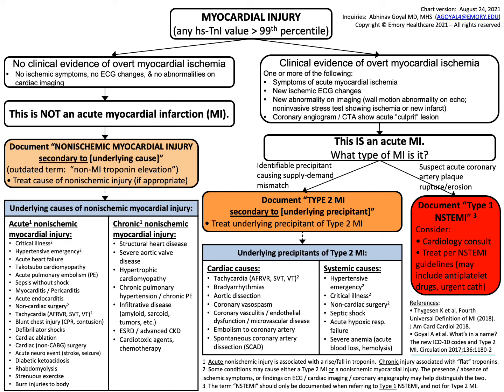If there is an underlying precipitant for type 2 MI, we document a type 2 MI because the underlying mechanism is supply-demand mismatch. If angiography confirms or we strongly suspect acute coronary artery plaque rupture or erosion, we document type 1 MI or STEMI, which warrants cardiology consult and treatment per STEMI guidelines. Please note that for many patients with non-ischemic myocardial injury and type 2 MI, we should not reflexively treat with IV heparin, as it is often not indicated and may even be harmful.